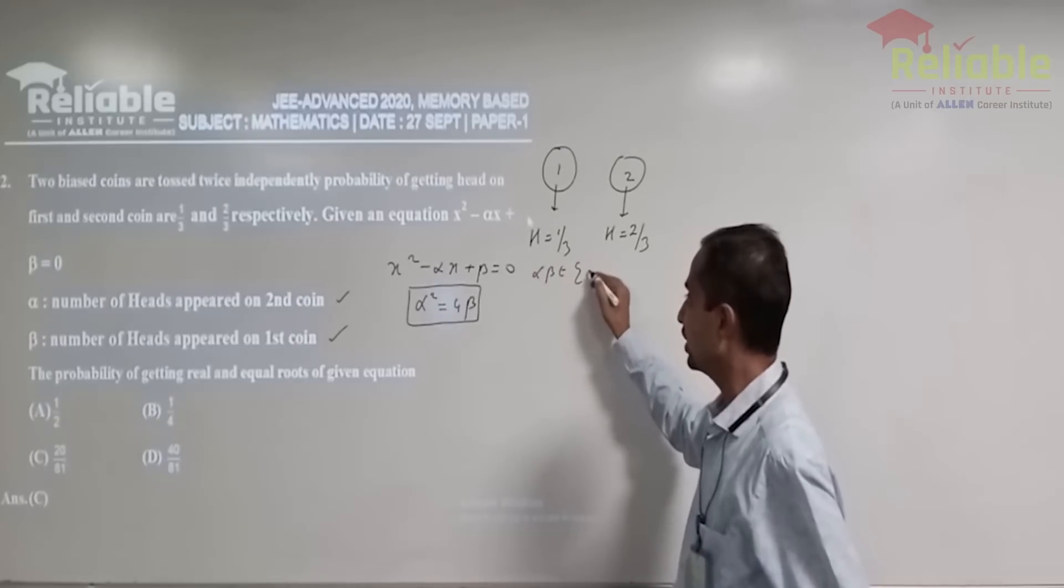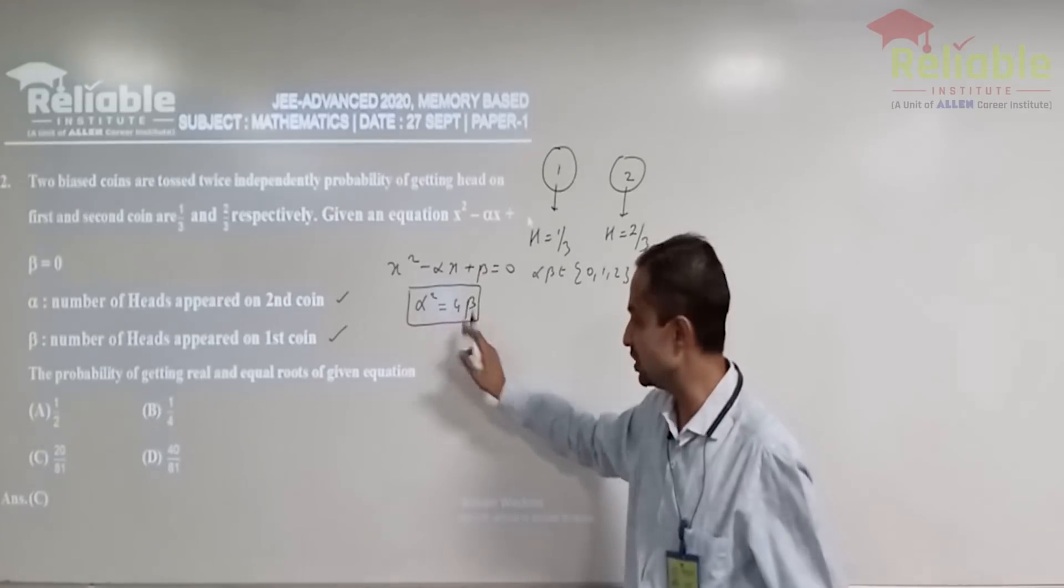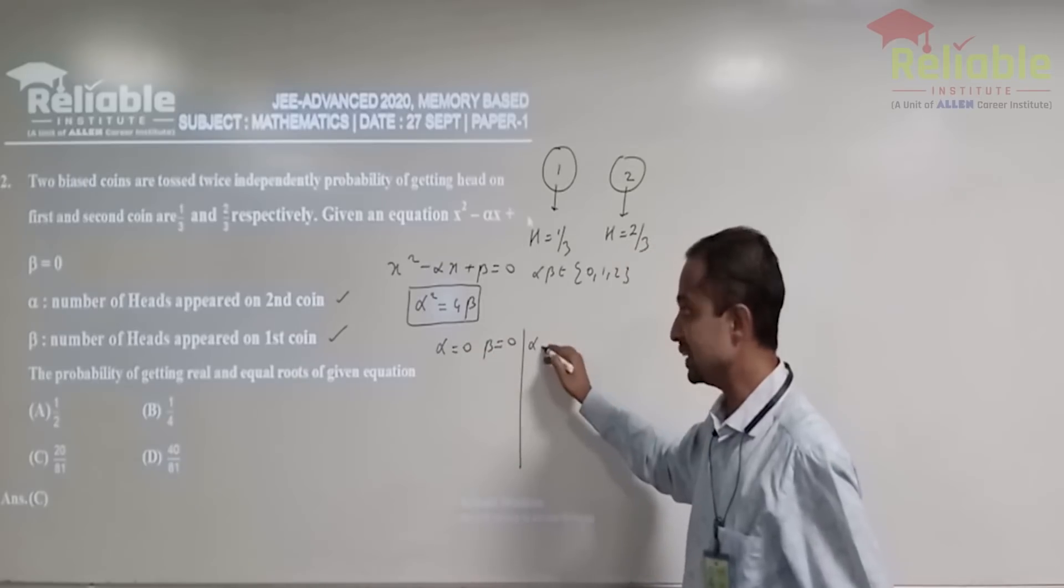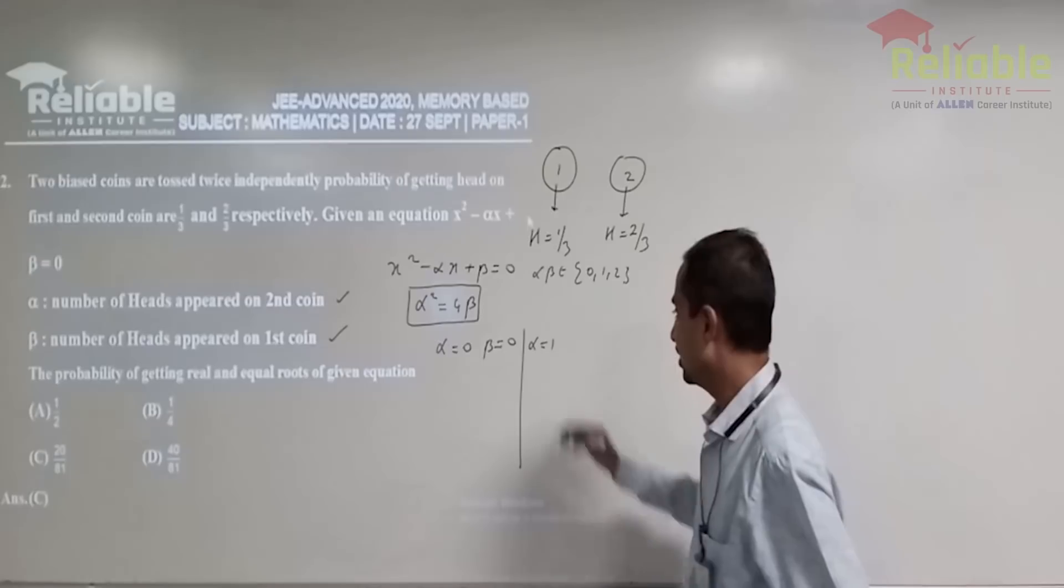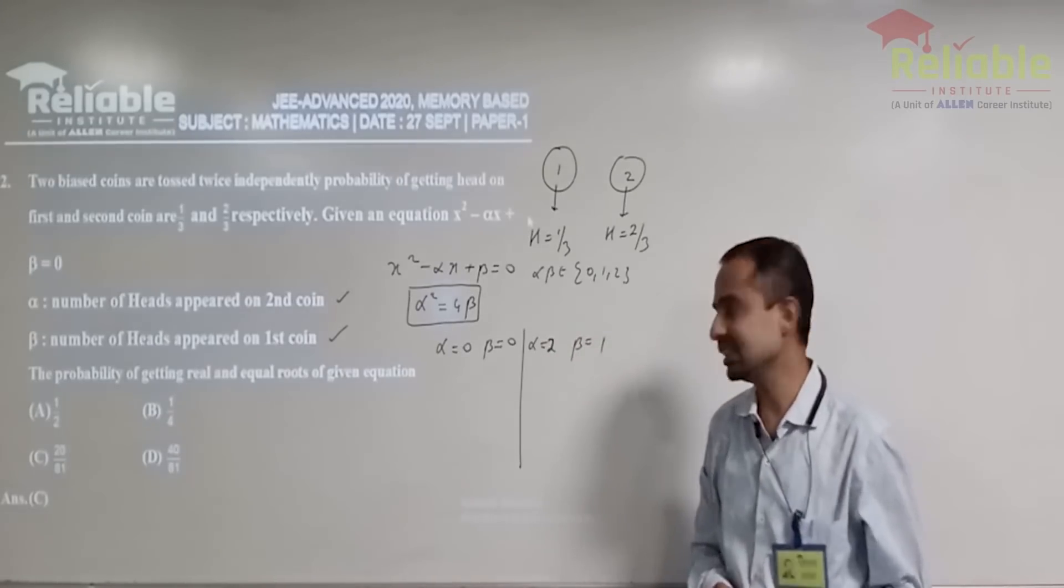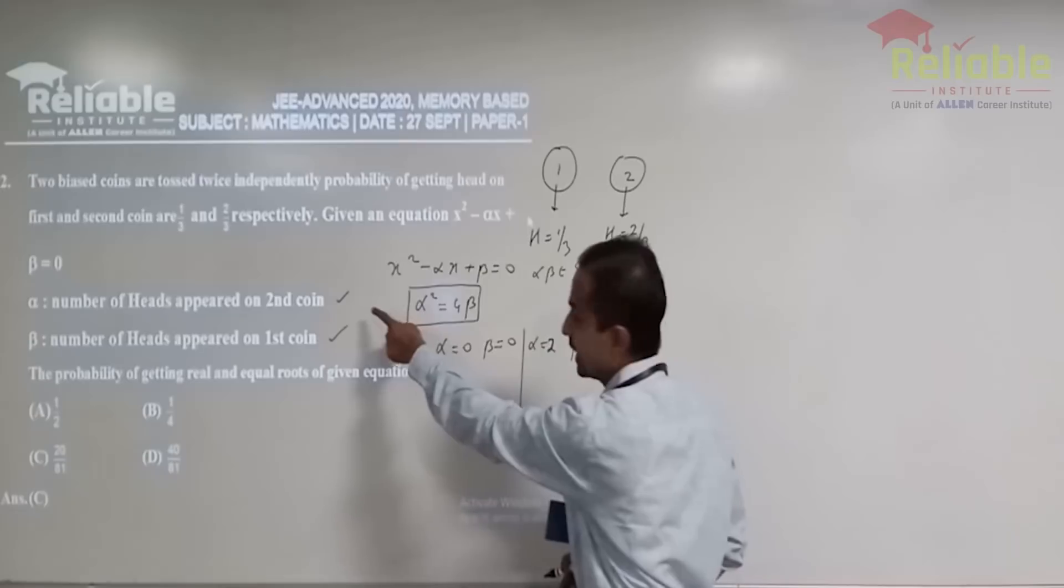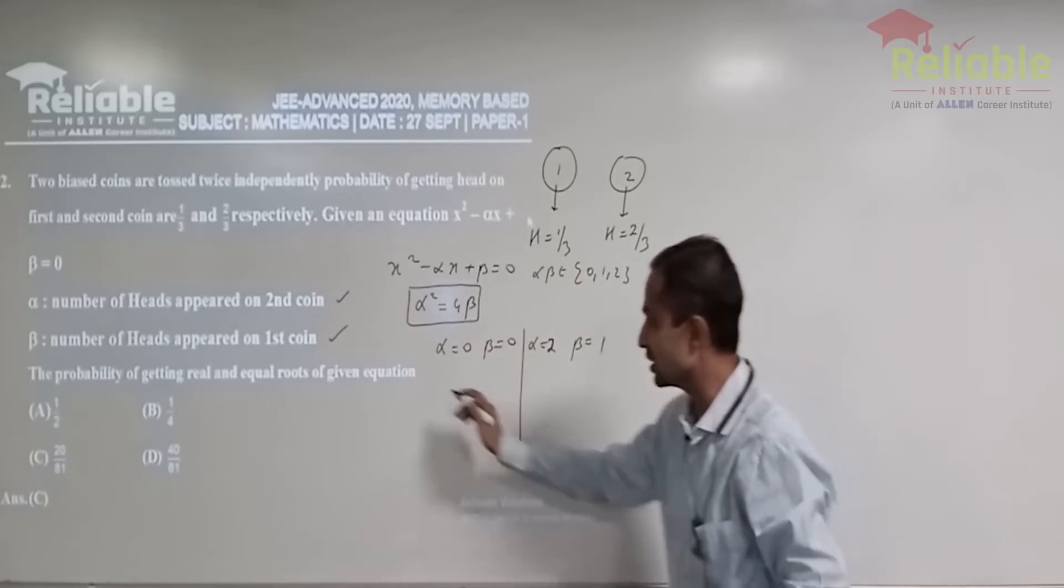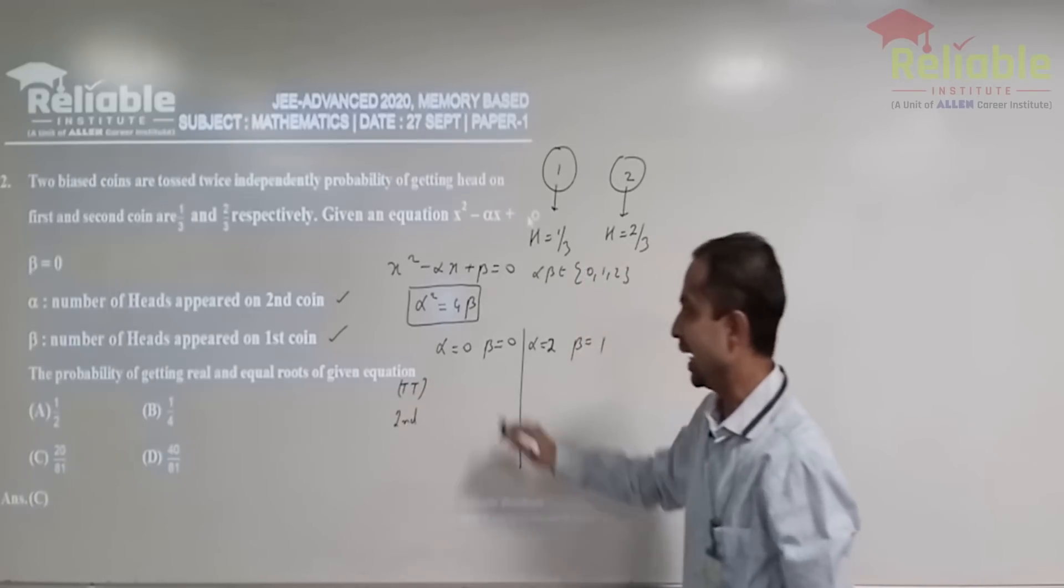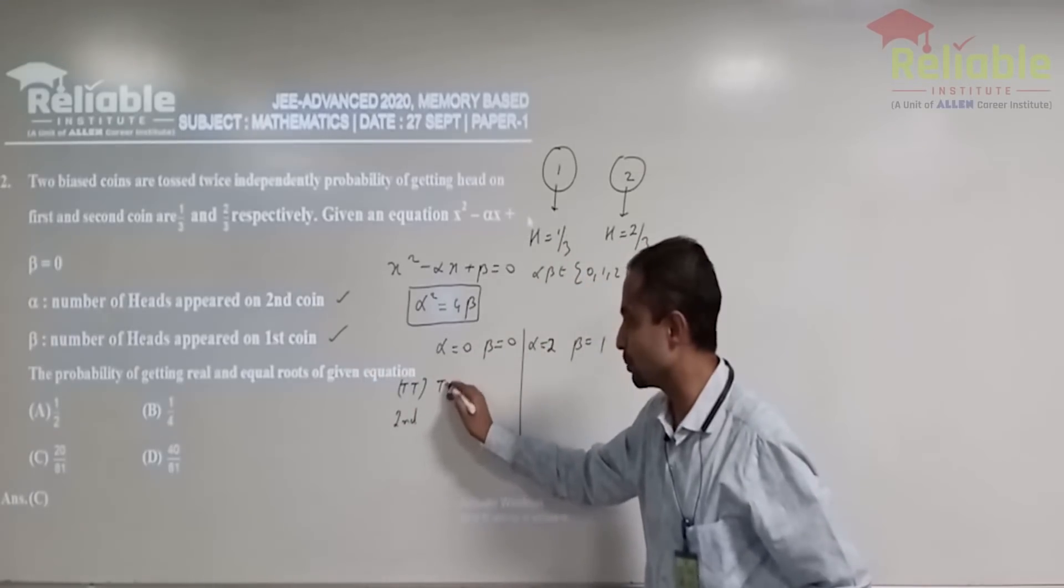Beta is the first coin and alpha is number of heads appeared on the second coin. Now we want to get equal roots of this equation. That is discriminant should be equal to 0. So alpha square is 4 beta. So what are the possible things alpha and beta? One should remember that both varies from 0, 1 and 2. So if alpha were to be 0, beta has to be 0. If alpha is 1, beta has no possible value. So if alpha is 2, then beta is 1. So that's the only kind of solutions that we can expect.